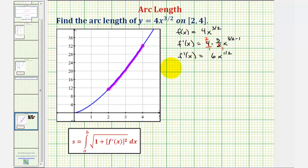Therefore the arc length is equal to the integral of the square root of 1 plus 6x to the 1 half squared, integrated with respect to x from 2 to 4.